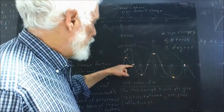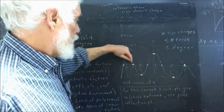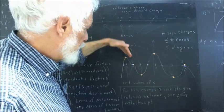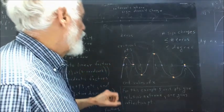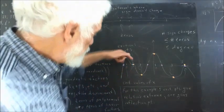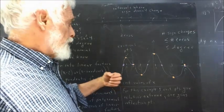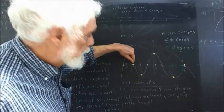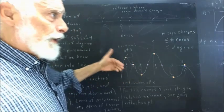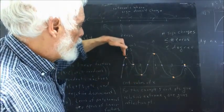Now, what happens to the second derivative at the inflection-type critical point? The derivative is negative but approaching zero, so it's increasing — meaning the second derivative is positive, and the graph is concave upward. But after passing through zero, the derivative goes negative again, so the derivative is now decreasing on the other side — the second derivative becomes negative. The second derivative changes sign from positive to negative, and the concavity changes from upward to downward.